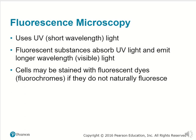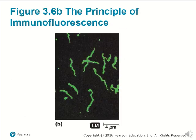Fluorochromes, or fluorescent dyes, will stain cells to help distinguish different parts of a cell, if it doesn't naturally absorb UV light and emit colored light.